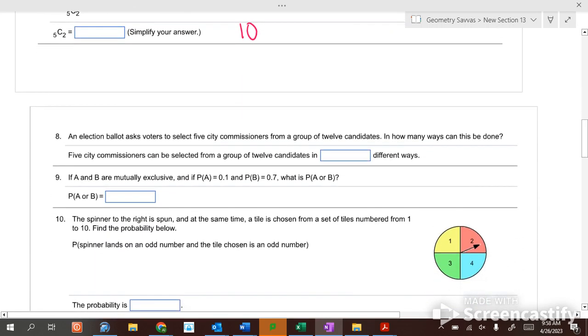An election ballot for voters for five commissioners from a group of twelve candidates. How many ways can you order them around? Combination. Because it doesn't matter the order. Twelve C five. Seven hundred and ninety-two.